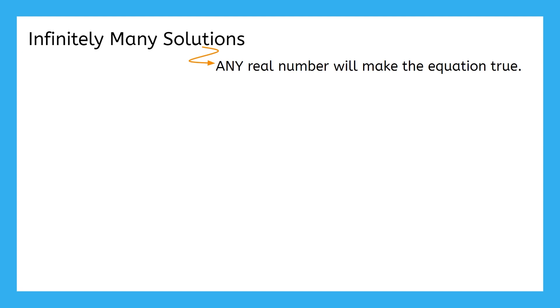Let's take equation number 2 from the GeoGebra activity: 7 plus 2x equals 3 plus 2x plus 4. This equation has infinitely many solutions. Pick a number, any number, and try substituting it for x to see what happens. Go ahead and pause the video here to try it yourself now.